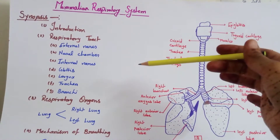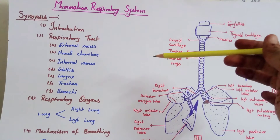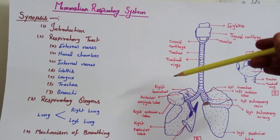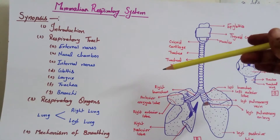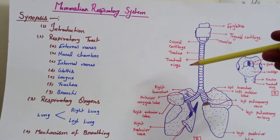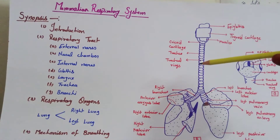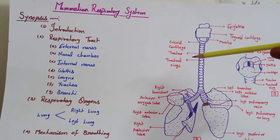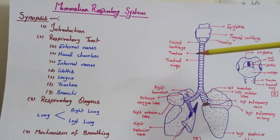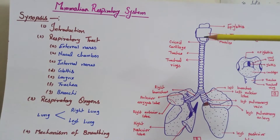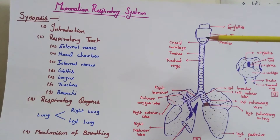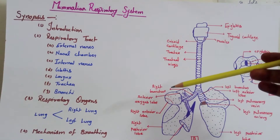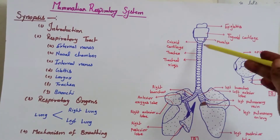The glottis opens to the larynx. The larynx is a sound box — a laryngeal cavity present at the anterior end of the trachea. This chamber creates the speaking sound in the rabbit, which is why it is called a sound chamber. The larynx opens to the trachea.